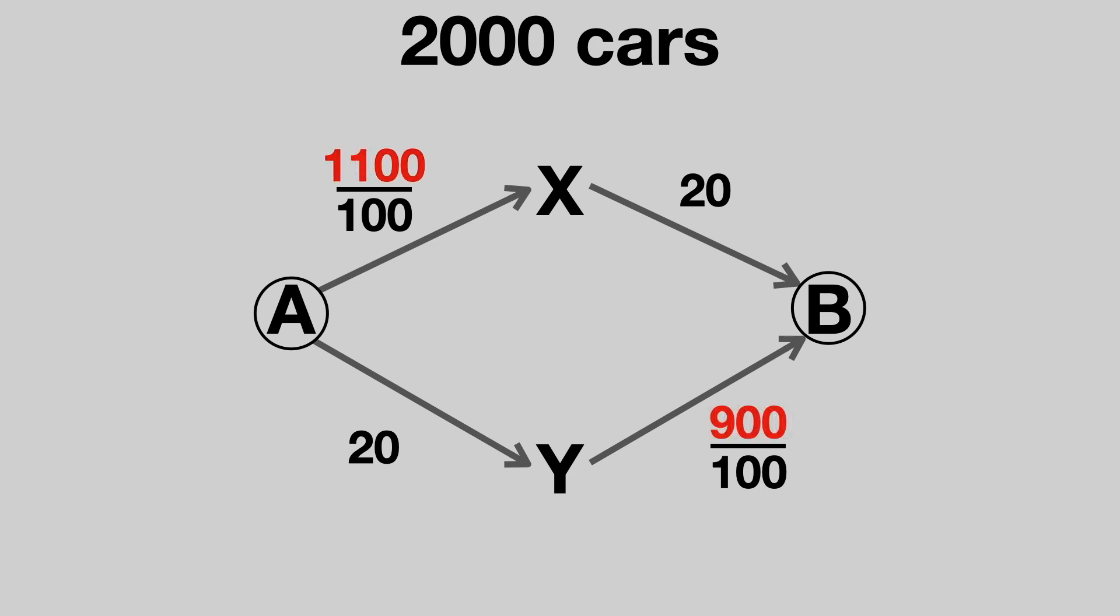Well, then road A-X would be more congested than road Y-B, so it's quicker to use route 2. There is thus an incentive for some drivers to switch and use the quicker route. Drivers will change route until both routes take the same amount of time.